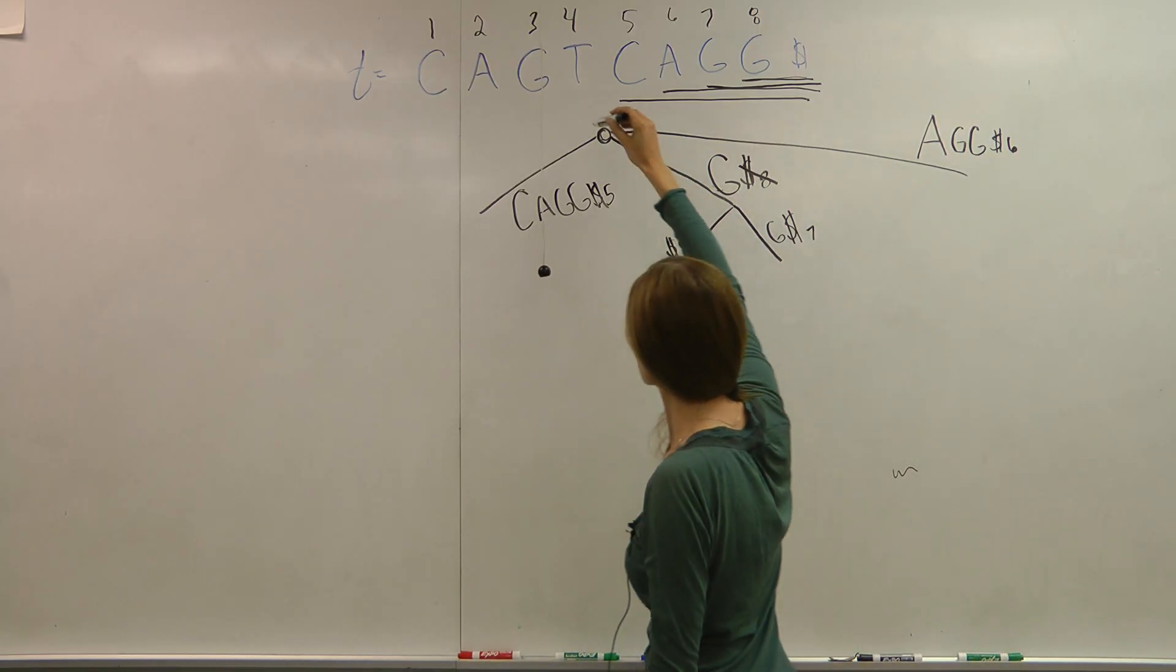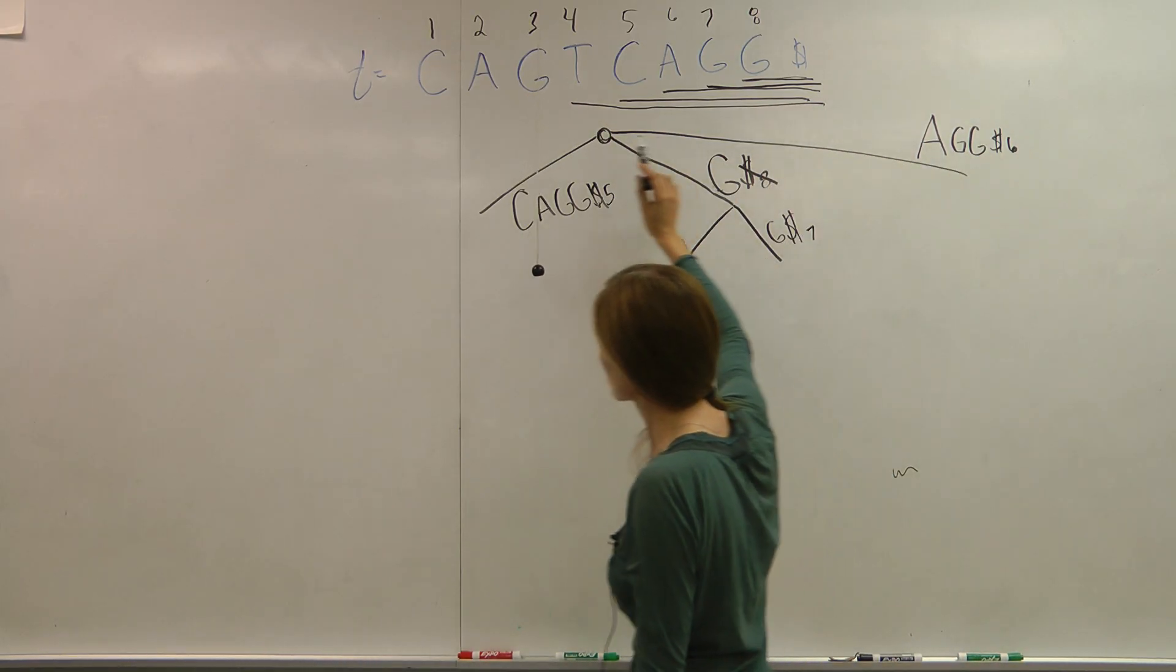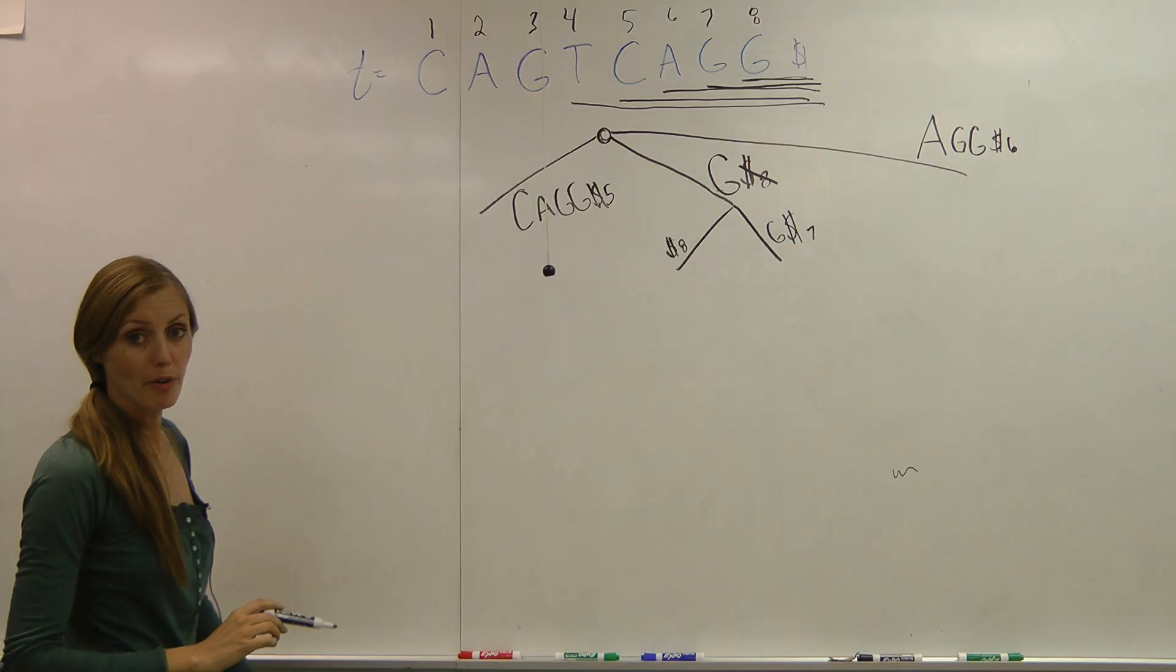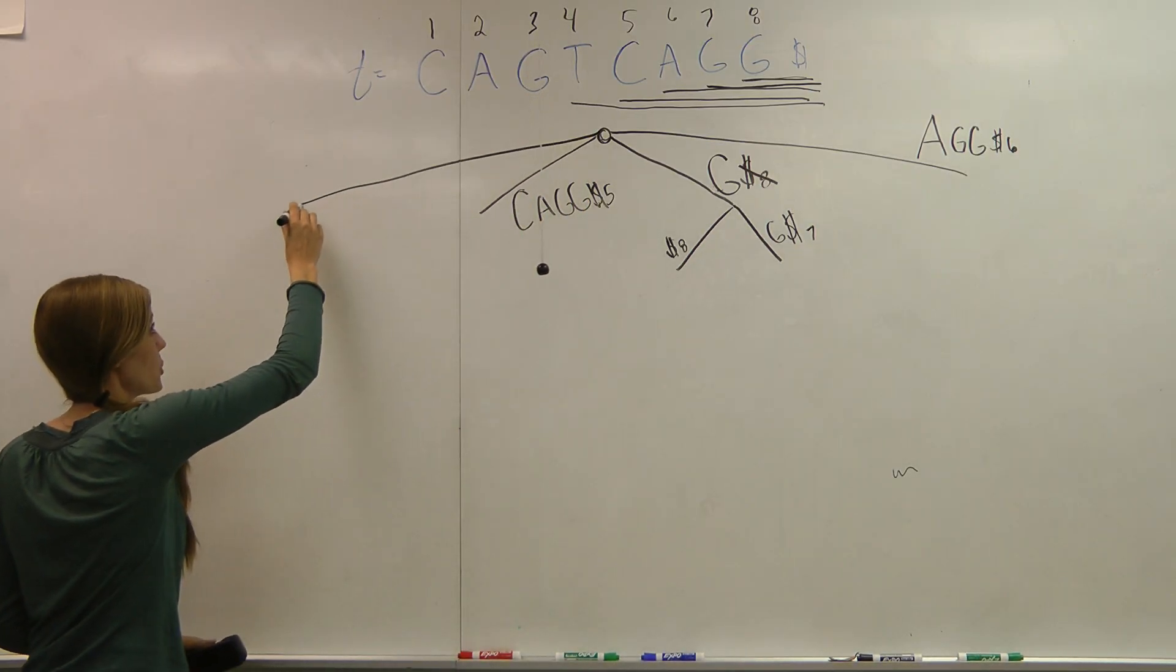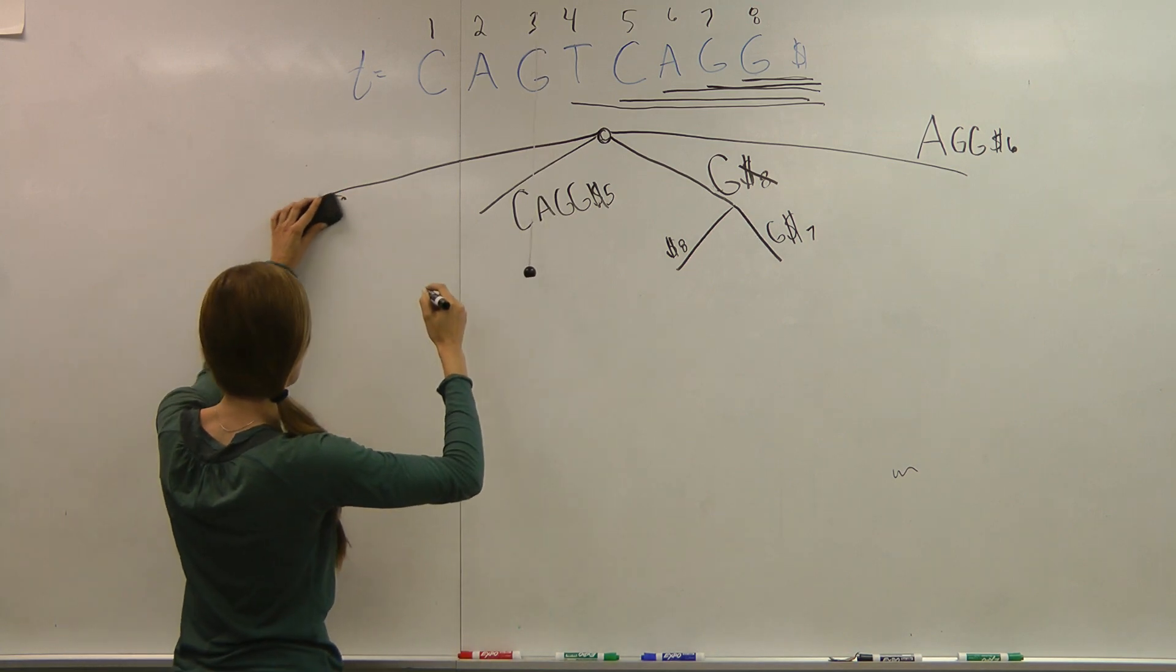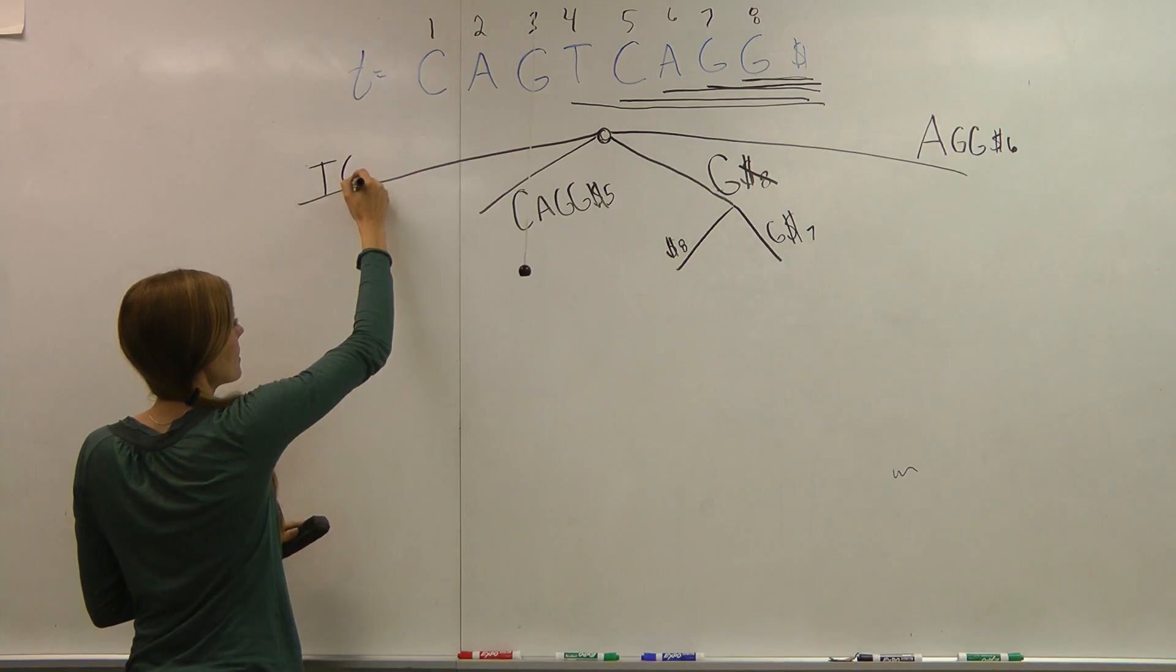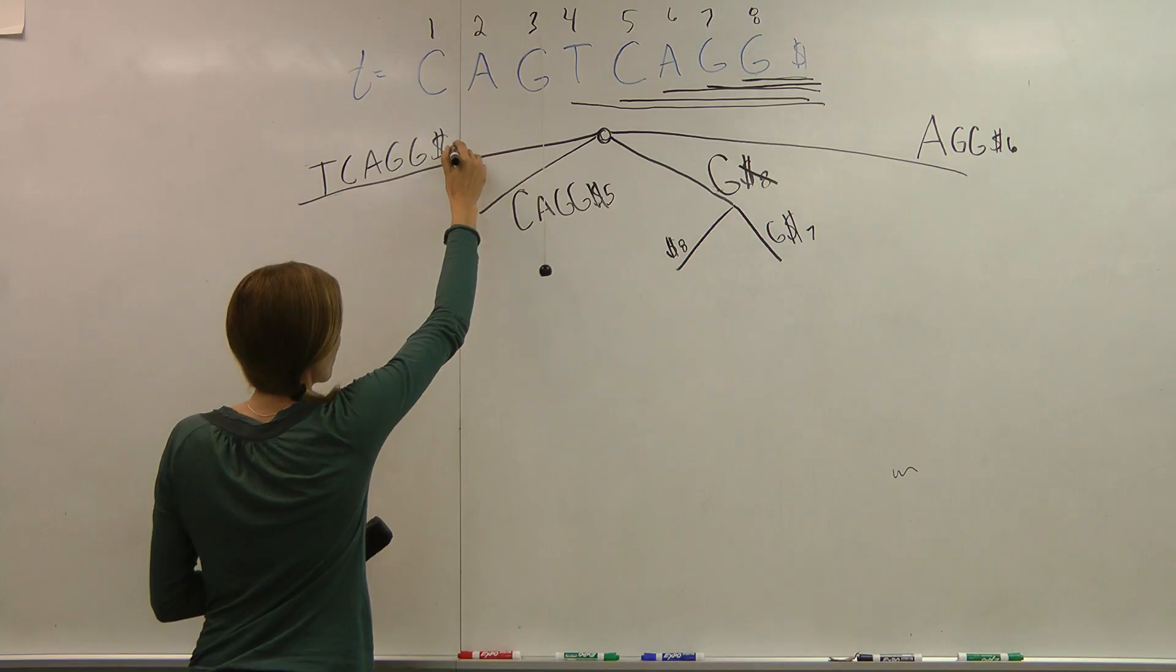I go to my next suffix. Starts at T. I check my tree. There is no T branch. So I make a T branch. And I assume that the only option that I'm going to have that starts with T is that suffix. And it starts at four.